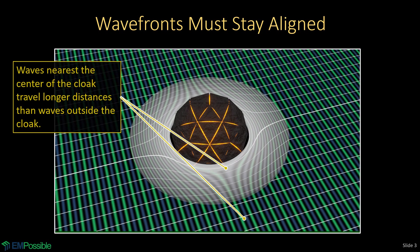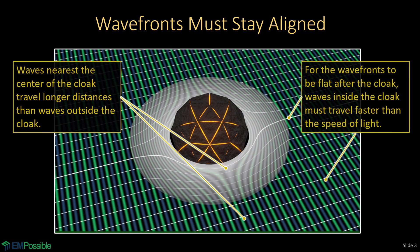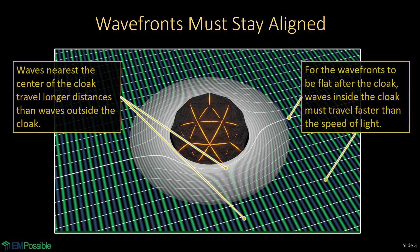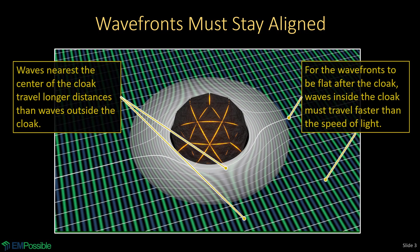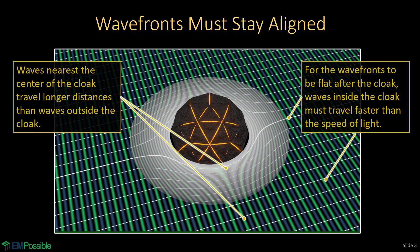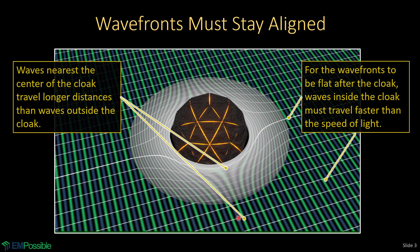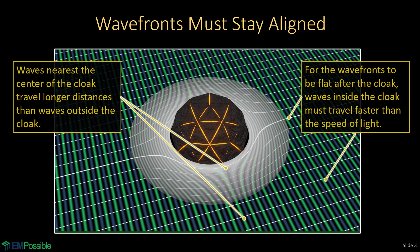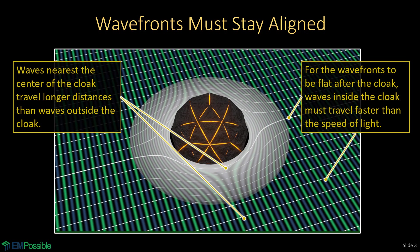On the outside, the light just travels in a straight line. Think about what that means: in order for those wavefronts to come out flat, the light at the center of the cloak that travels this longer distance actually has to travel faster than the speed of light, in order to exit the cloak synchronized with that same piece of the wave that just traveled in a straight line. So it seems fundamental that for an invisibility cloak, the wave has to exceed the speed of light.